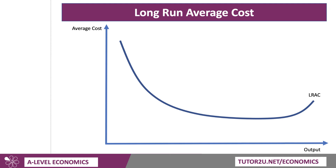The long run average cost is the cost per unit when all factors of production are variable and the business can change the whole scale of production. This is a familiar shaped average cost curve with falling unit costs over much of the range of output, but average costs starting to go up beyond a certain point.